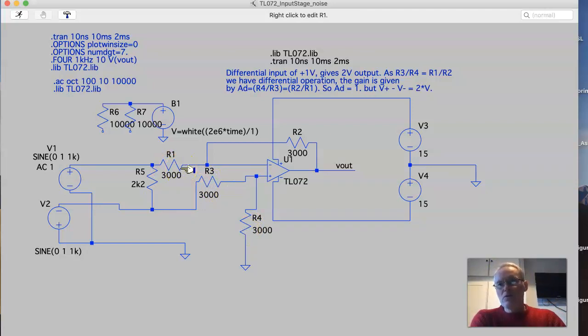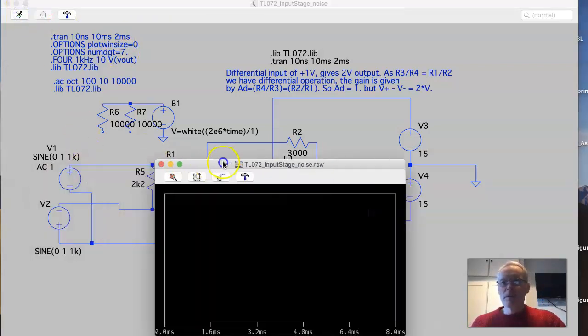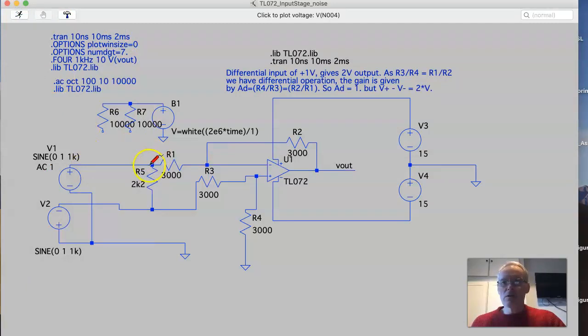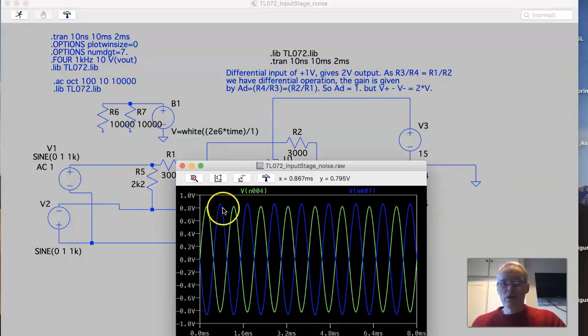So in actual fact this one sees 6k whilst this one sees 3k. So in terms of a differential drive or balanced drive there's often a mismatch between both sides. Now what we could do to highlight that, if I run this and I look at the levels going in there and there, you'll see...